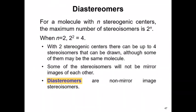For example, if we have a molecule with two stereogenic centers, then the maximum number of stereoisomers possible is four. With two stereogenic centers, there can be up to four stereoisomers based on the formula, although some of them may actually be the same identical molecule — meaning two of the drawn stereoisomers are actually mirror images of one another that are superimposable. Any mirror images that are superimposable are considered identical molecules.